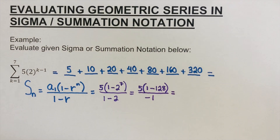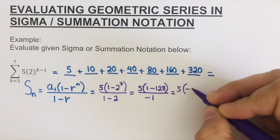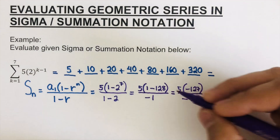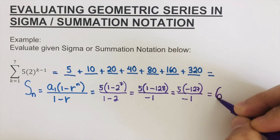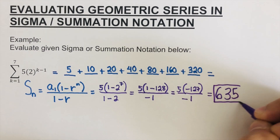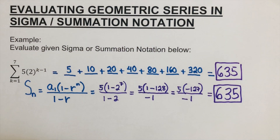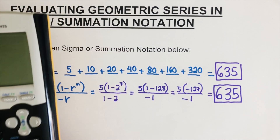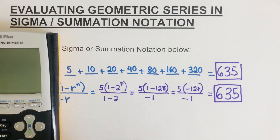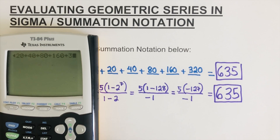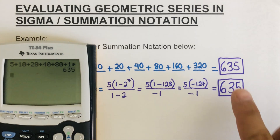Simplifying further, this gives us five times negative 127 over negative one. Doing all the math, this comes out to 635. So the sum of this geometric series is 635. Let's check using the calculator by adding all the terms: 5 + 10 + 20 + 40 + 80 + 160 + 320 = 635. Confirmed.